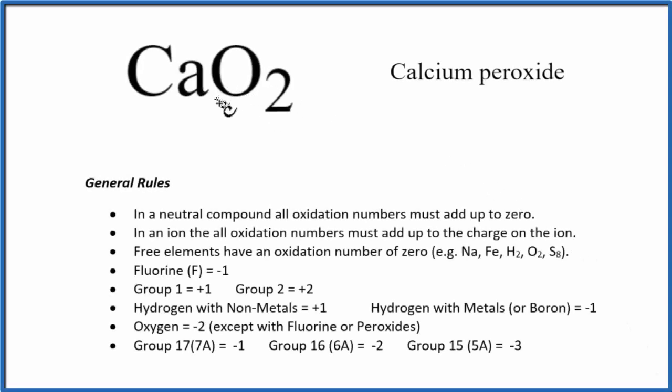To find the oxidation number for each element in CaO2, that's calcium peroxide, we'll use these general rules here.